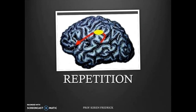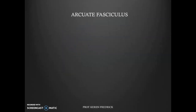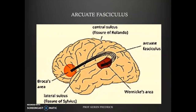Next we look at repetition and its deficit: conduction aphasia. As already discussed, an individual with transcortical sensory aphasia can repeat due to the direct connection of Wernicke's area with Broca's area. To understand how this happens we need to get familiar with a bundle of axons called the arcuate fasciculus — a bundle of axons that conveys speech sounds from the Wernicke's area to the Broca's area, highlighted in the figure.